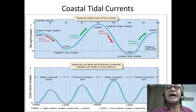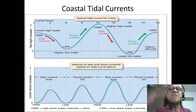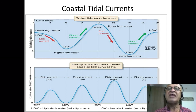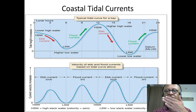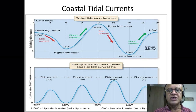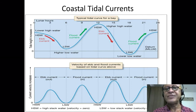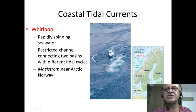Here you have higher high water and lower high water — these are just terminologies used when you have mixed tidal patterns. You're going to get different ranges of tidal heights during the day, so you have to name them differently. Here you can see the ebb current going out, flood current coming in, ebb current, flood current, and so on, with low slack water and high slack water. Simple stuff but good to know.